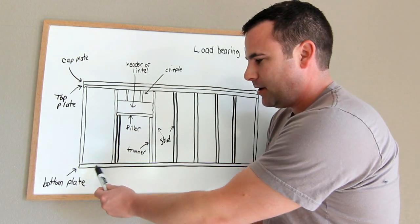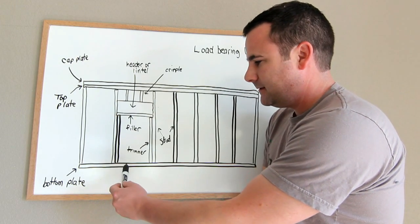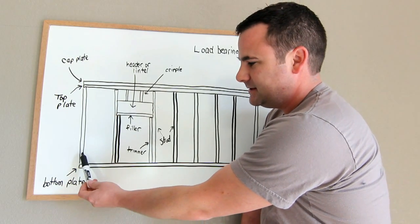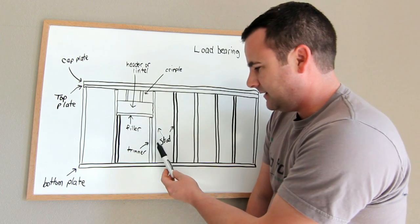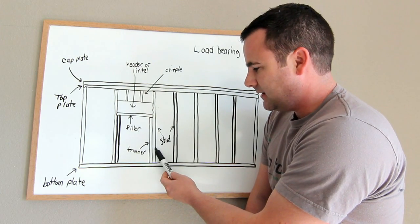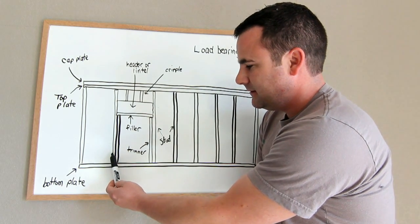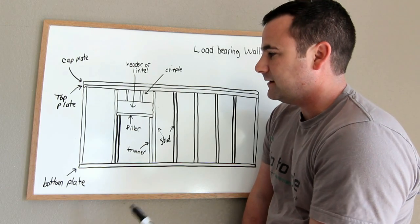So down here you have the bottom plate or the sole plate. These are your studs. So this would be a stud. This, this, all these, right? And even the ones right here on either side of the door. We'll get into that in a sec.